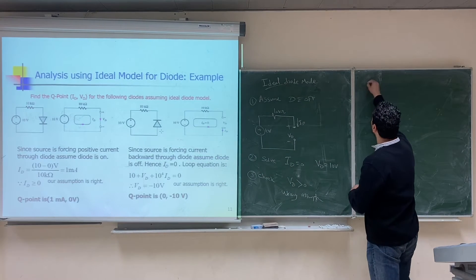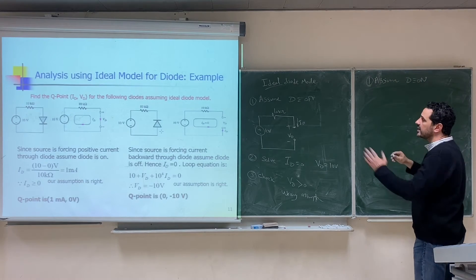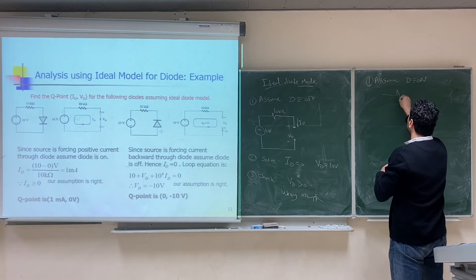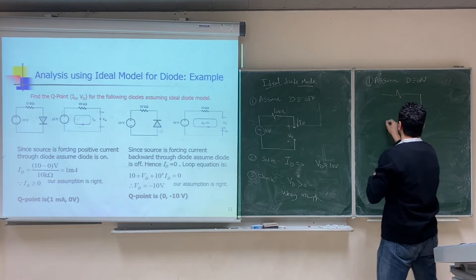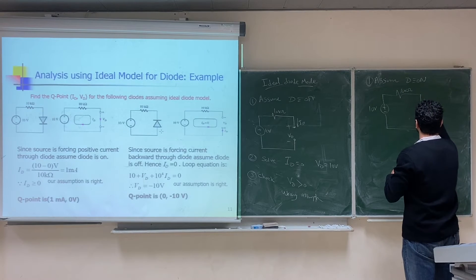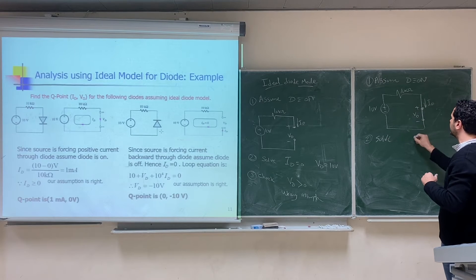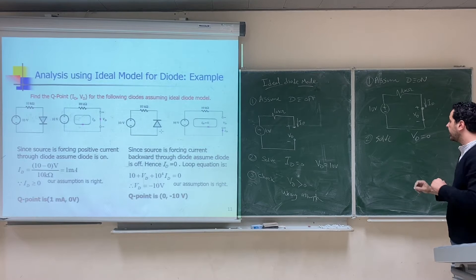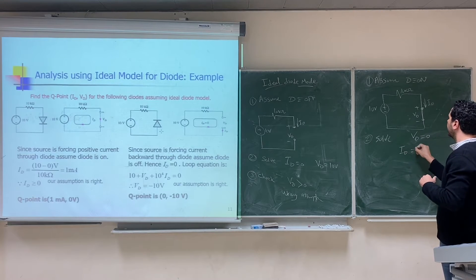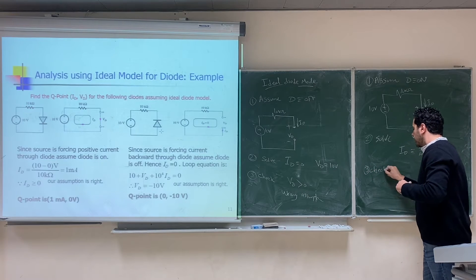We repeat the steps. Assume the diode is on. With the ideal diode model, on means a short circuit. The circuit becomes: 10V source, 10kΩ, and a short circuit for the diode. We label the diode current and voltage. Solving: V_D = 0 (short circuit), and I_D = 10V / 10kΩ = 1 milliampere.